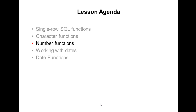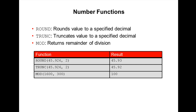Number functions accept numerical input and return numerical values. In this topic we are going to explain number functions like round, truncate, and mod. The round function rounds a value to a specified decimal. It has two arguments: either a column expression and the number of decimal places. The truncate function truncates the value to a specified decimal.